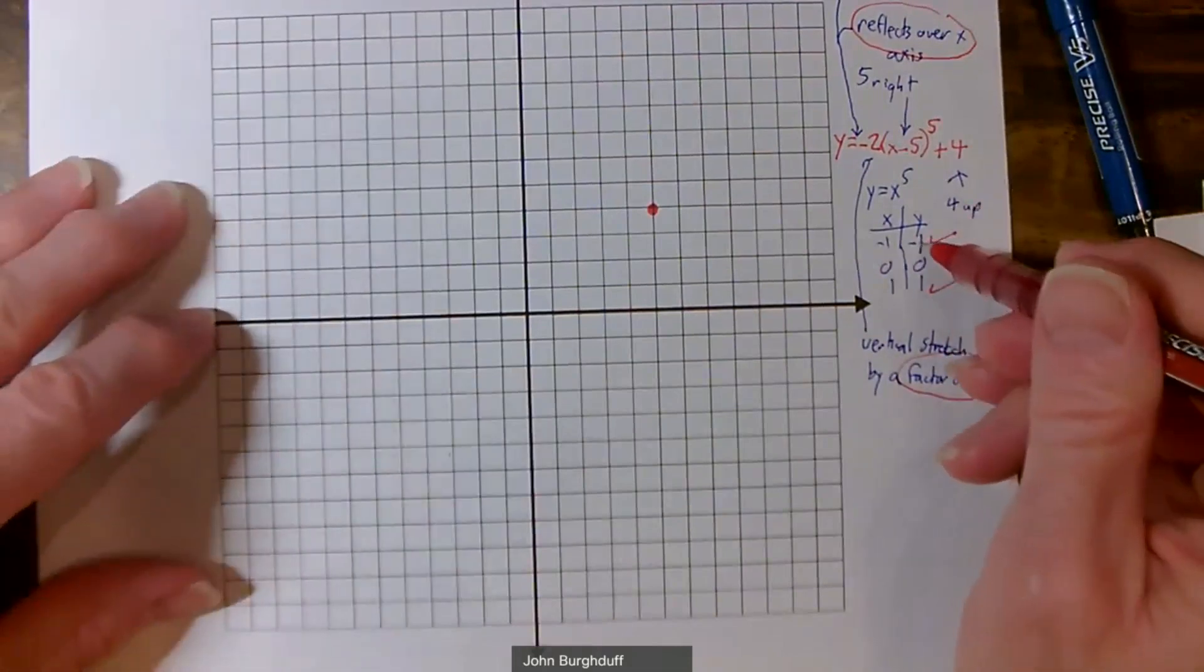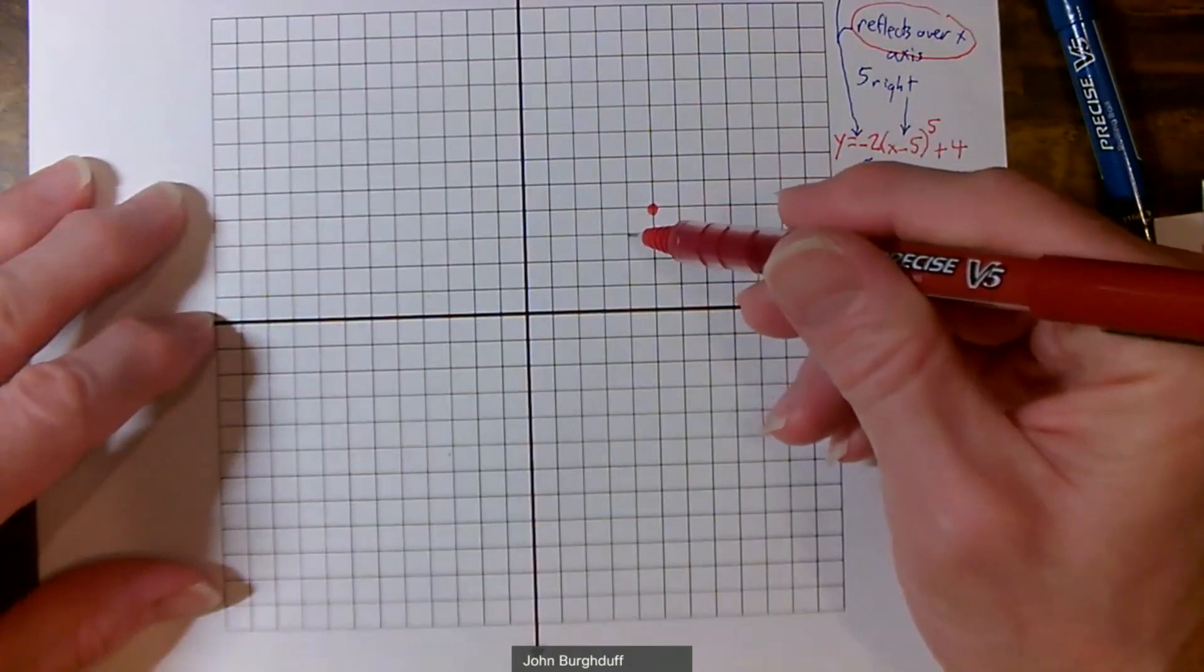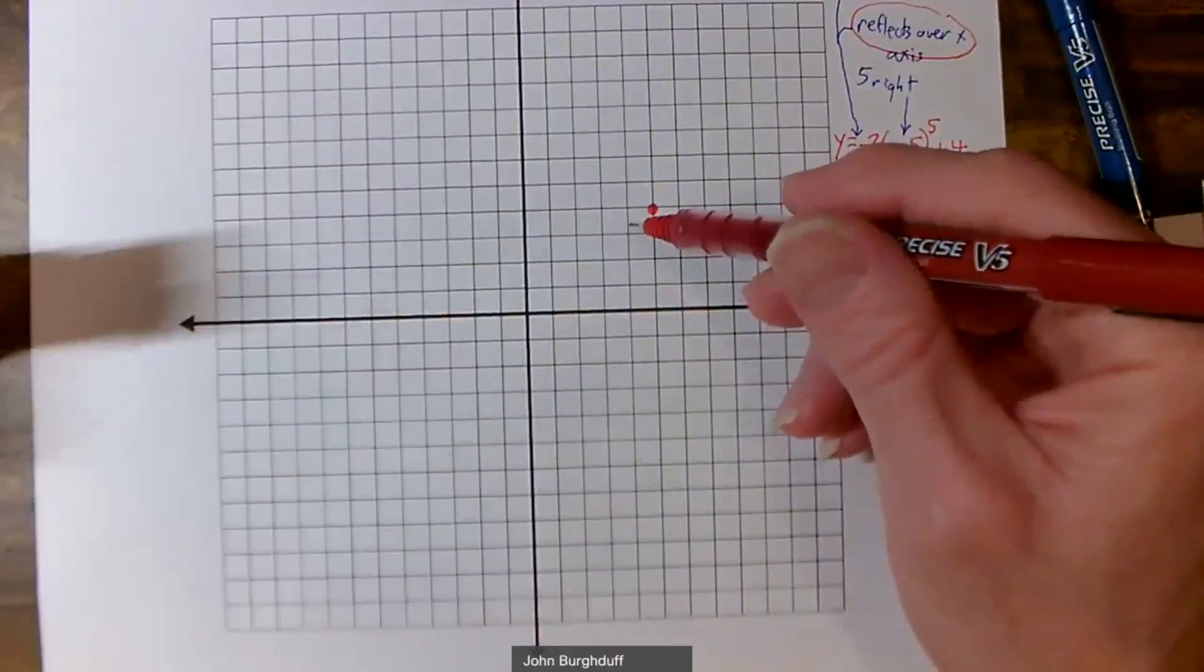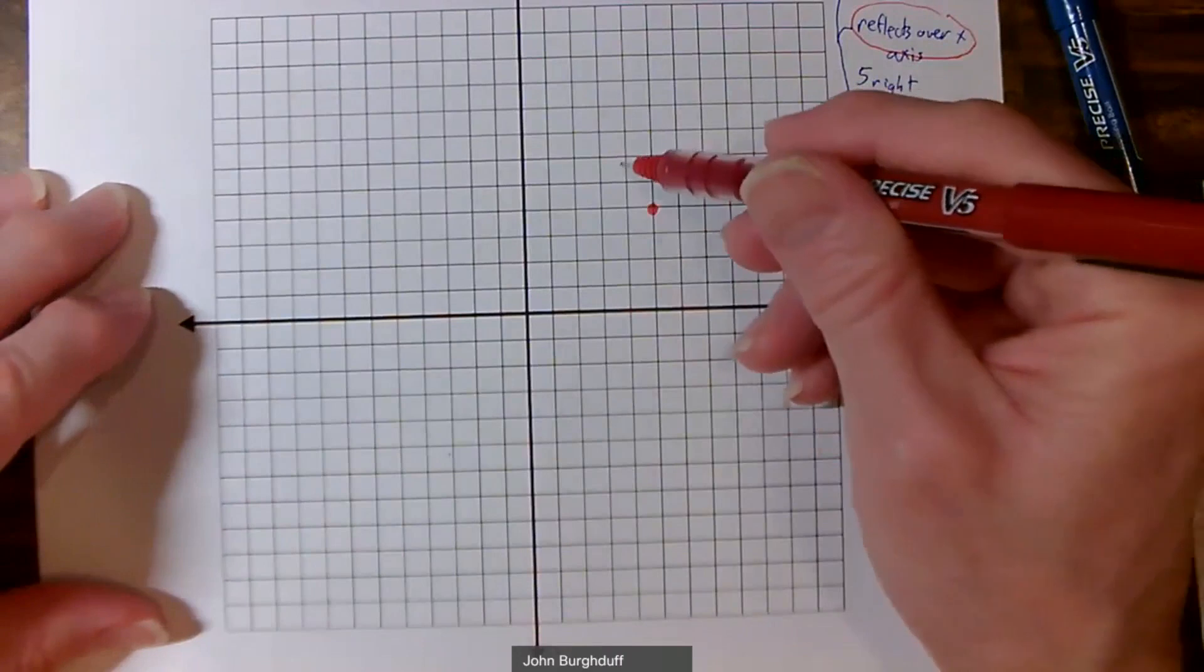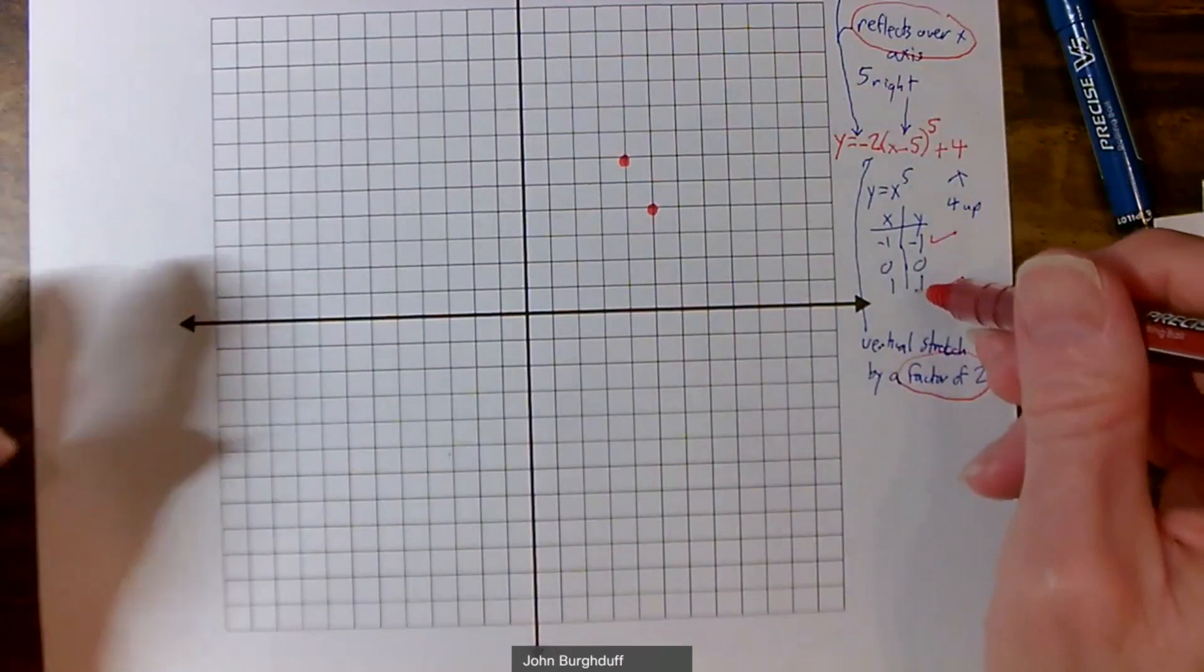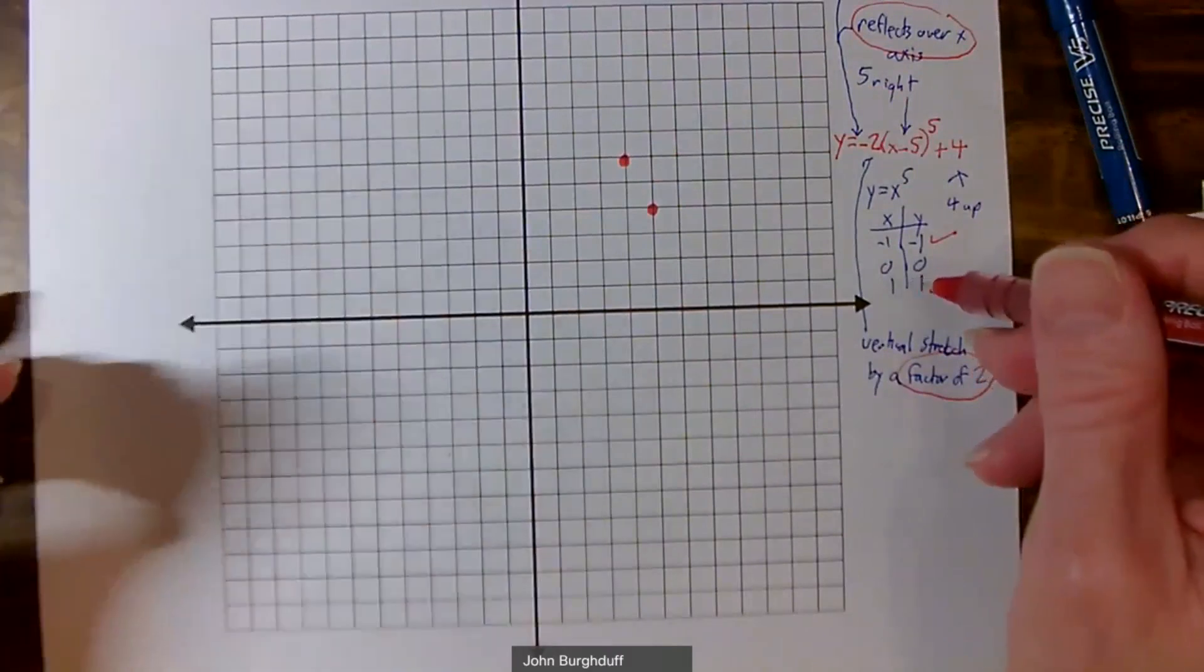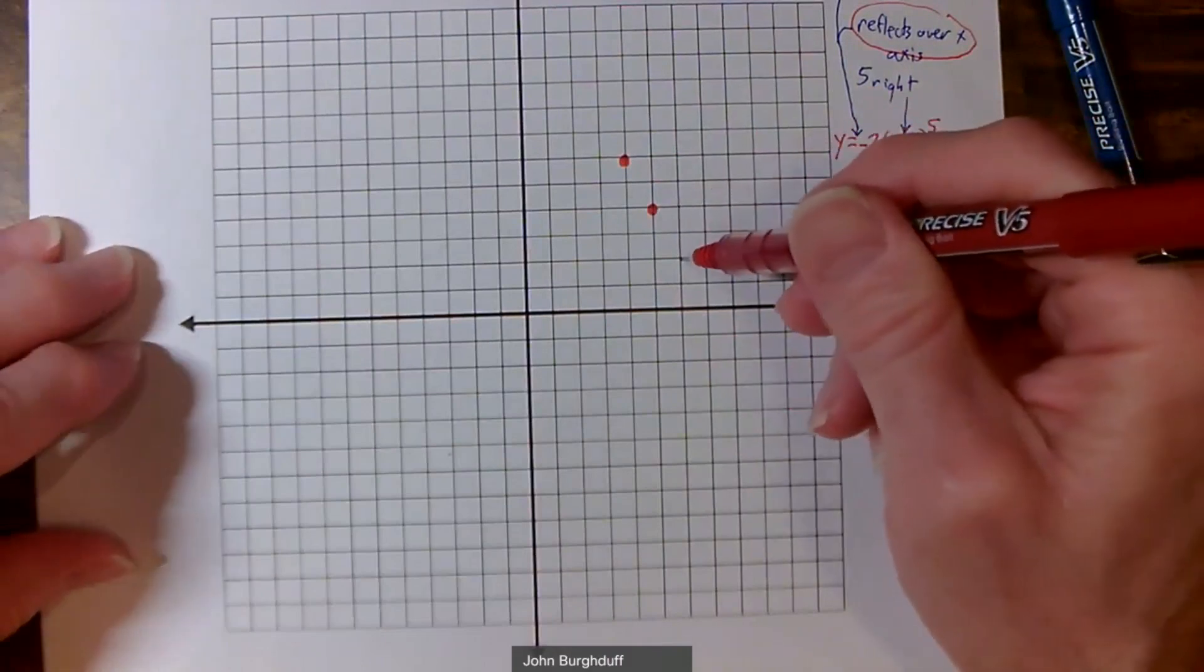So looking at negative 1, negative 1, that means that ordinarily the graph would be 1 left, 1 down from the new origin. But we're reflecting. So instead of going down, we're going to go up. And we're stretching. So instead of going up 1, we're going to go up 2. So left 1, up 2. And the 1, 1 tells you that ordinarily you would go 1 right, 1 up. But because we're reflecting, we'll go down instead of up. And because of the stretch factor, we'll go down by 2. So 1 right, 2 down.